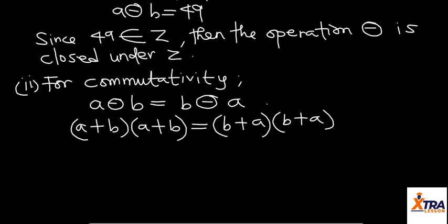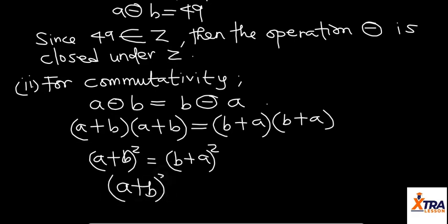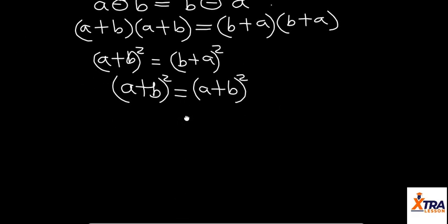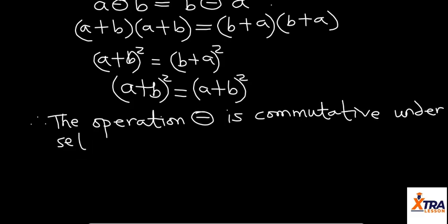If that is the case, we can simplify this further. This can be written as (B+A)² which, by rearranging, will still give us (A+B)². Since these two are equal, therefore the operation is commutative on set Z.